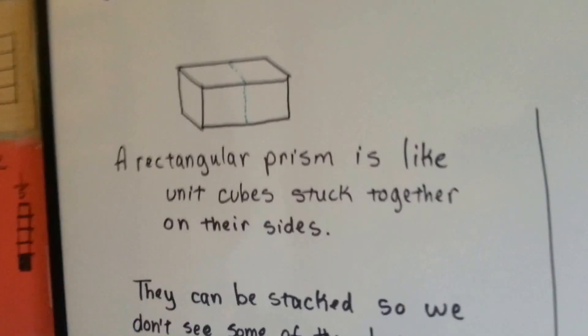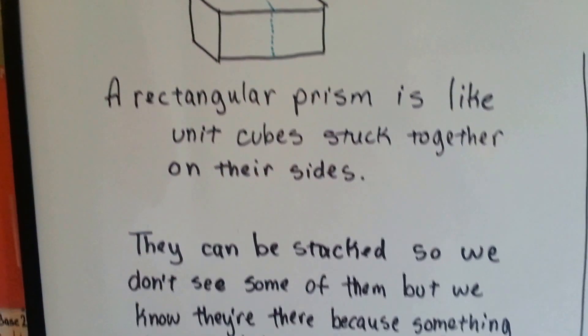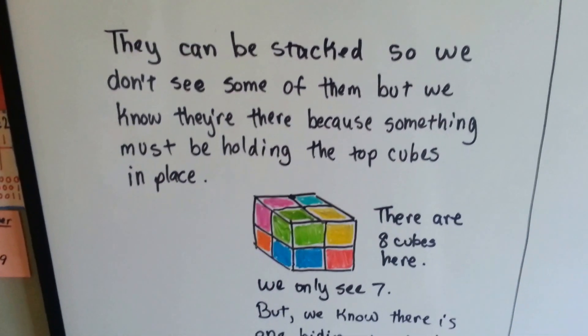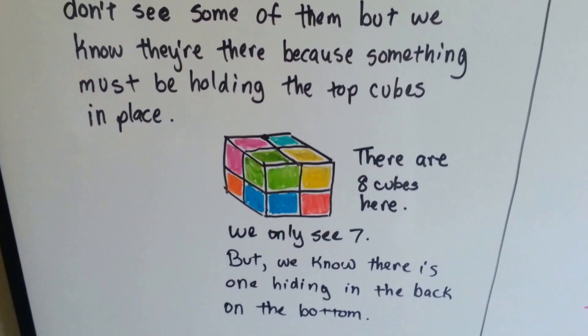A rectangular prism is like unit cubes stuck together on their sides. They can be stacked, so we don't see some of them, but we know they're there because something must be holding the top cubes in place.